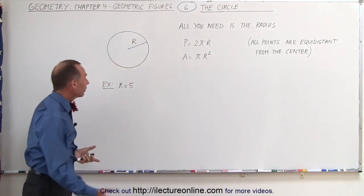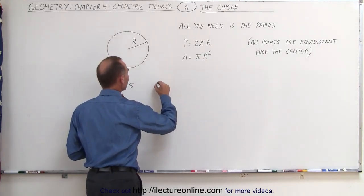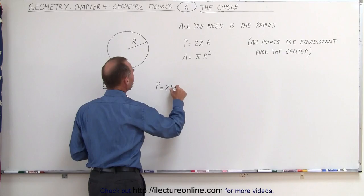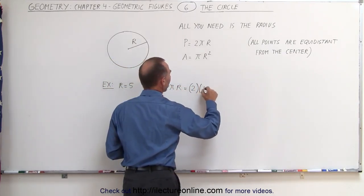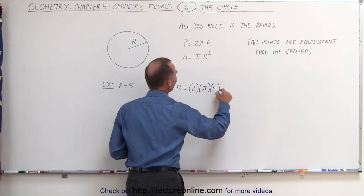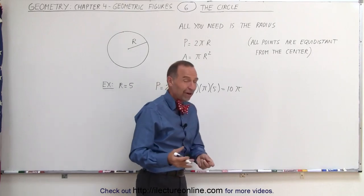So as an example, let's say that the radius equals 5. Then to find the perimeter, we can say that P equals 2π times r, which is equal to 2 times π times 5, which is equal to 10π. And of course, π can be found